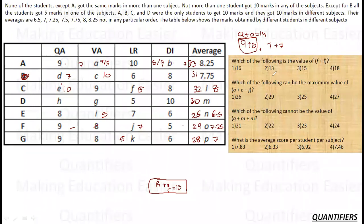Let's move to the questions. The first question: what is the value of F plus L? F is 5 and L is 8, so F plus L equals 13. The second question: what is the maximum value of A plus C plus J? C is fixed at 10, J is fixed at 7, so 10 plus 7 plus A. A can take a maximum value of 9, giving 10 plus 7 plus 9 equals 26 as the maximum possible value.